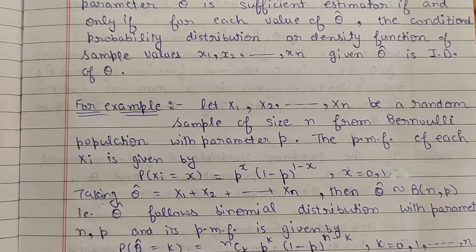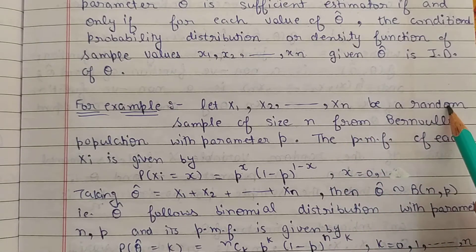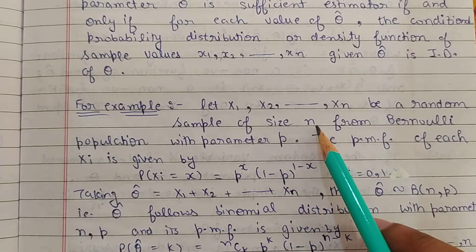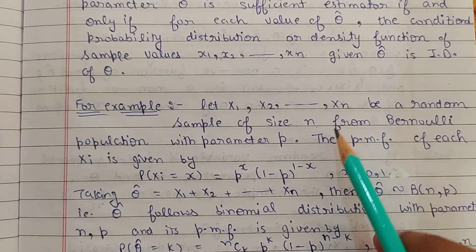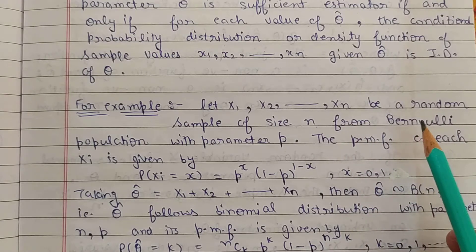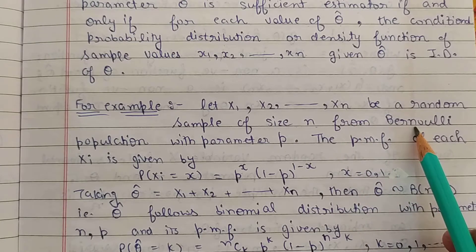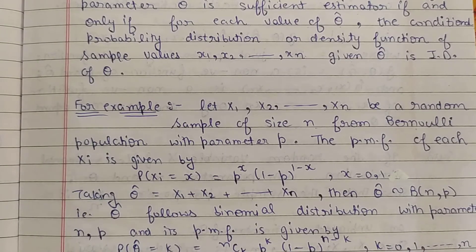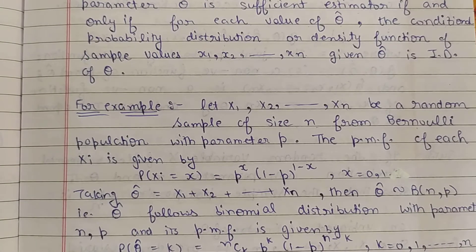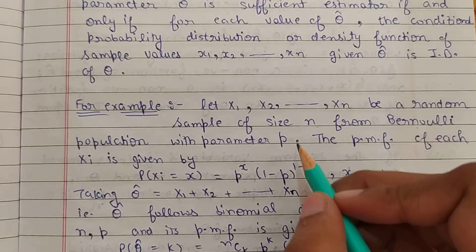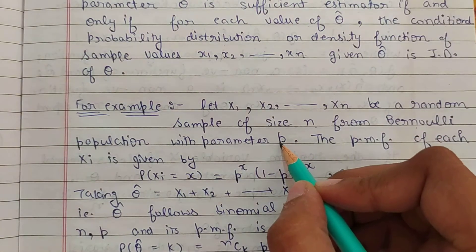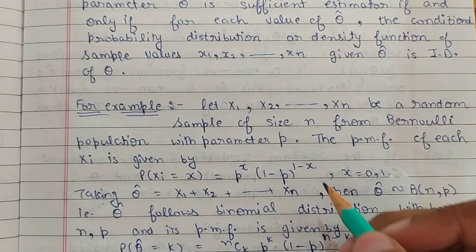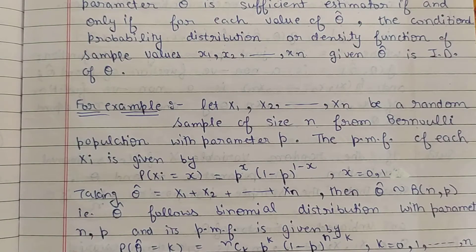For example, let x1, x2, ..., xn be a random sample of size n from a Bernoulli population — Bernoulli humne peeche consistent estimator mein kiya tha — with parameter p. Aur mean ka formula n*p, variance ka formula n*p*q, aur probability p plus q equal to 1.